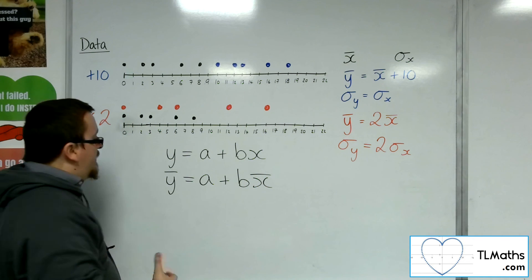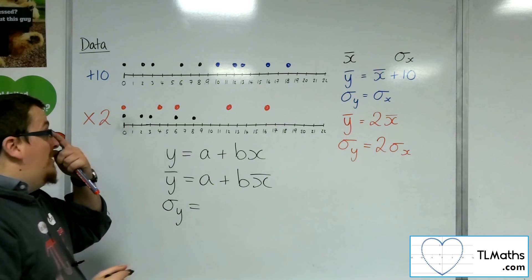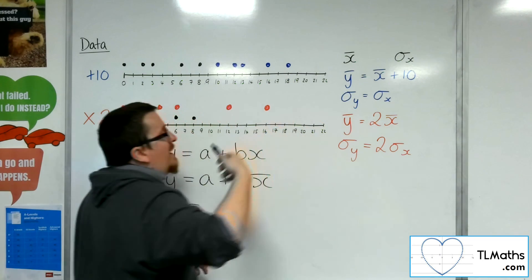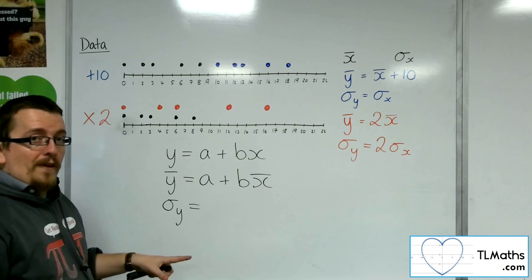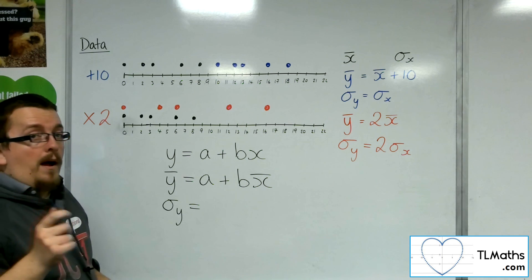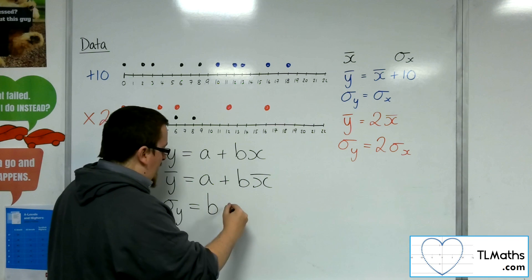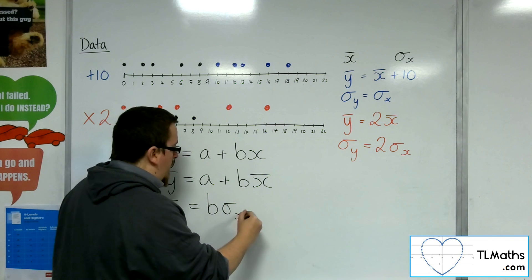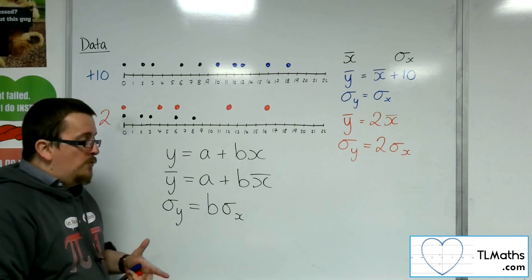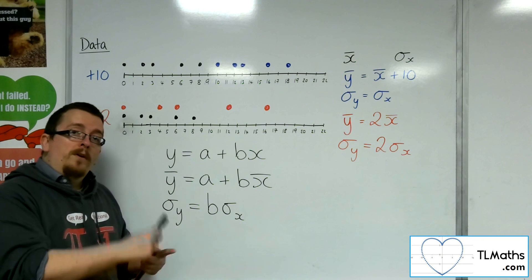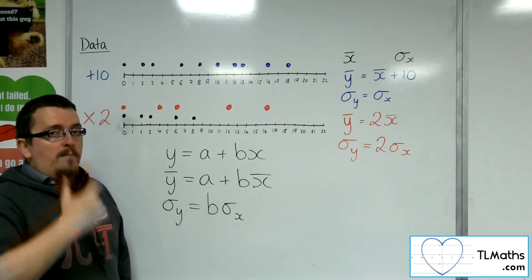The new standard deviation, well, the new standard deviation is not affected by adding or subtracting a certain amount to it. So this adding on of a will not affect the standard deviation. But multiplying by b will. So this will be b lots of sigma x. So this is what you need to remember. The mean is affected by both multiplication and addition, but the standard deviation is only affected by multiplication.